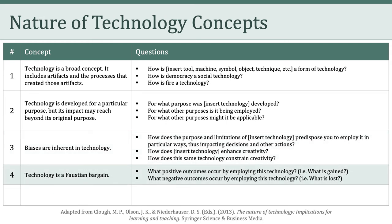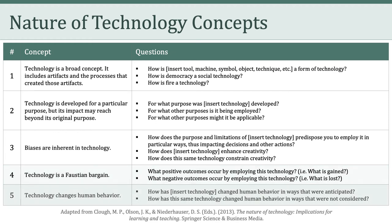The fourth concept is that technology is a Faustian bargain. When a new technology emerges, something is gained and something is lost. We have to challenge ourselves to ask what positive outcomes occur by employing a technology versus the negative outcomes. The fifth concept is that technology changes human behavior. We can ask how a given technology has changed human behavior in ways that were anticipated versus ways that were not considered.